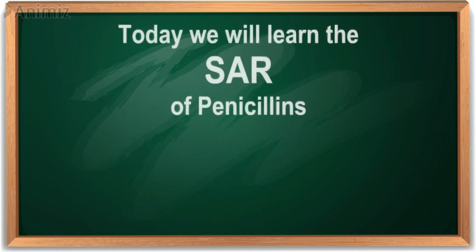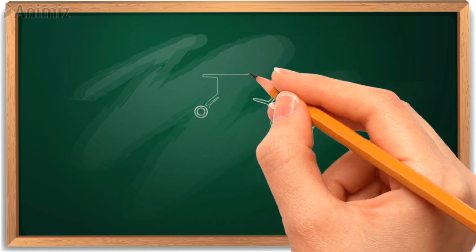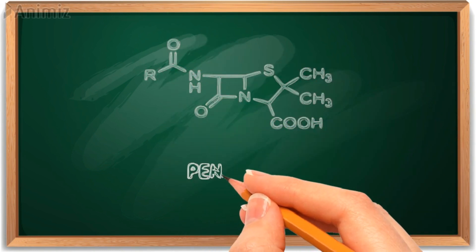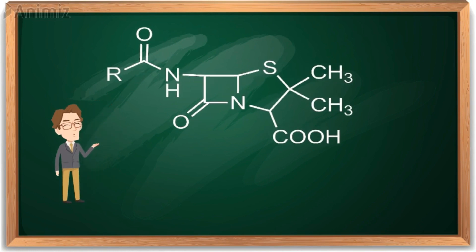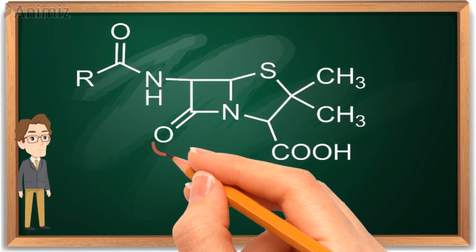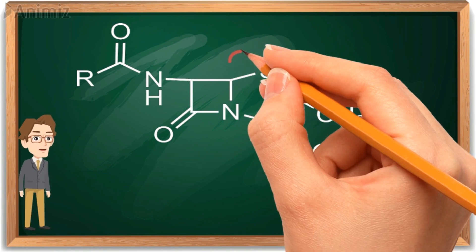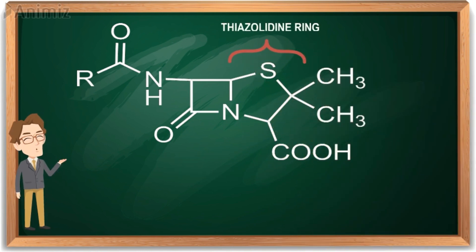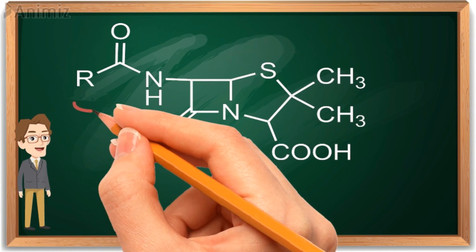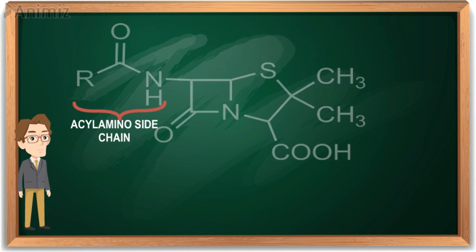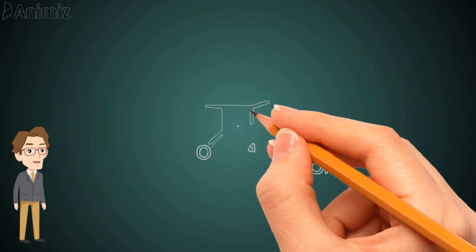The structure of penicillin consists of important functional groups such as a beta-lactam ring, a thiazolidine ring, and a side chain called an acylamino side chain. Now let's see this SAR in detail.